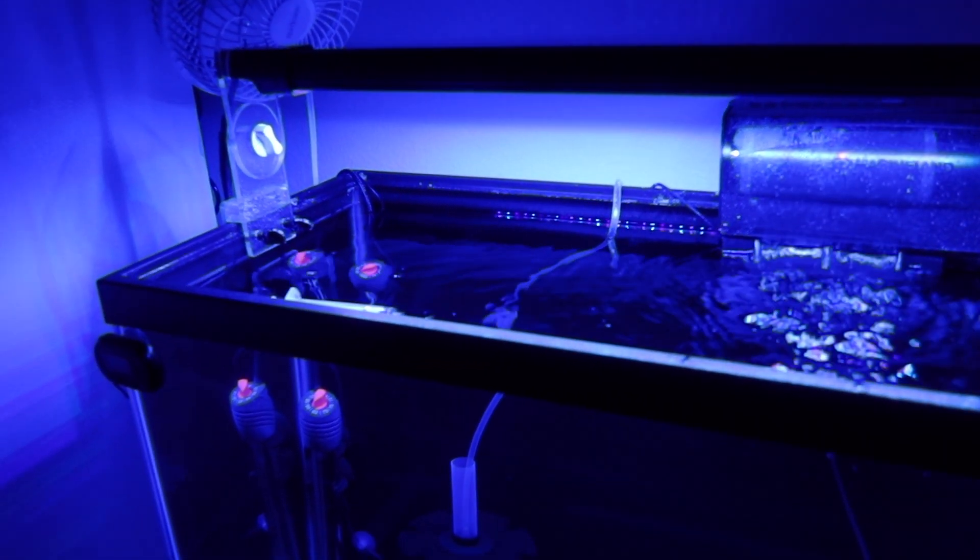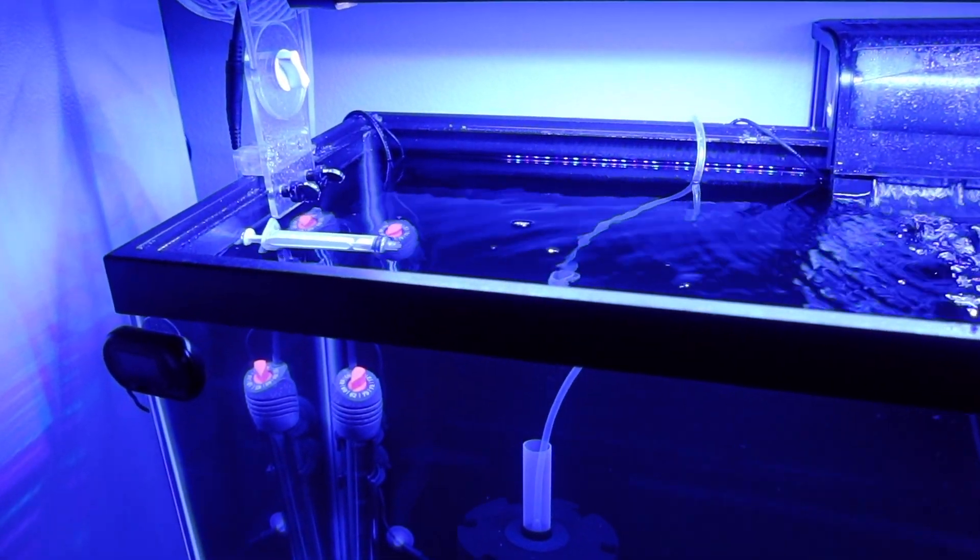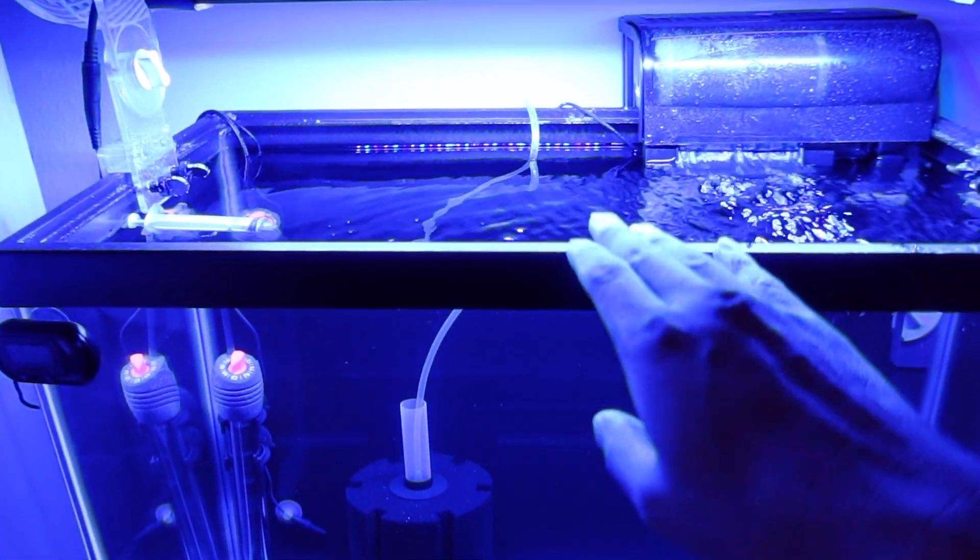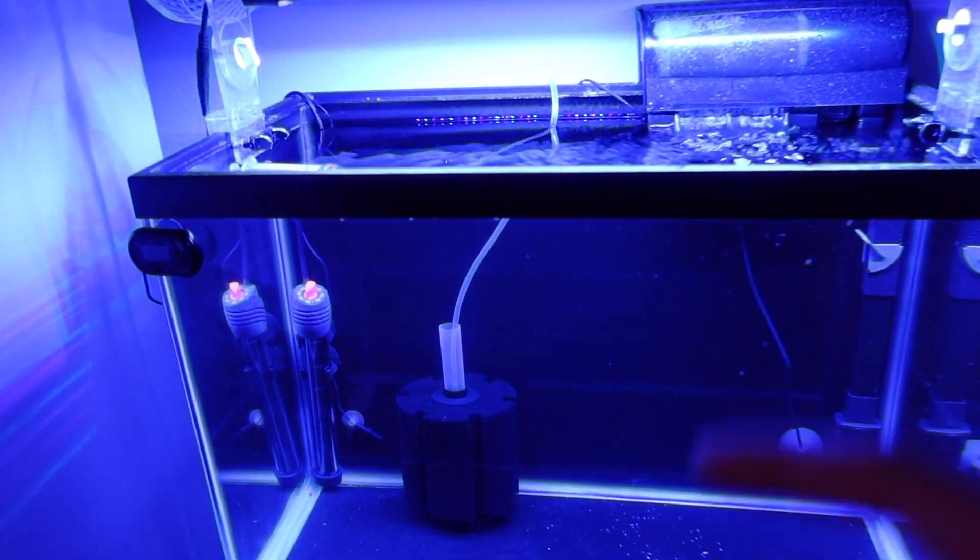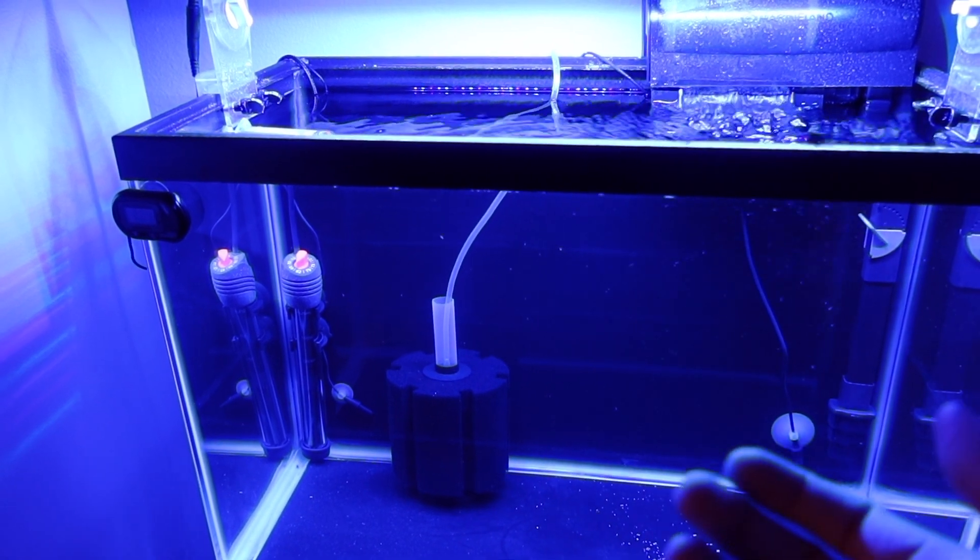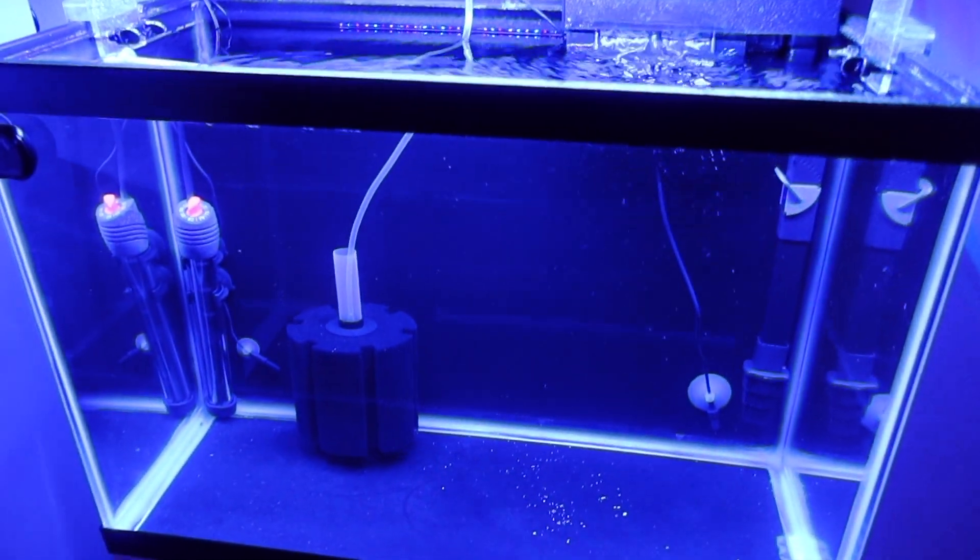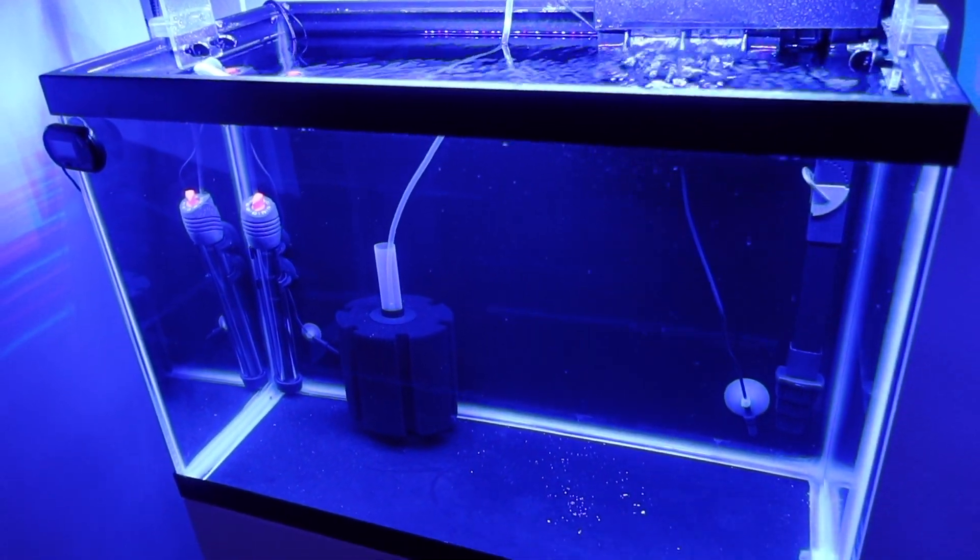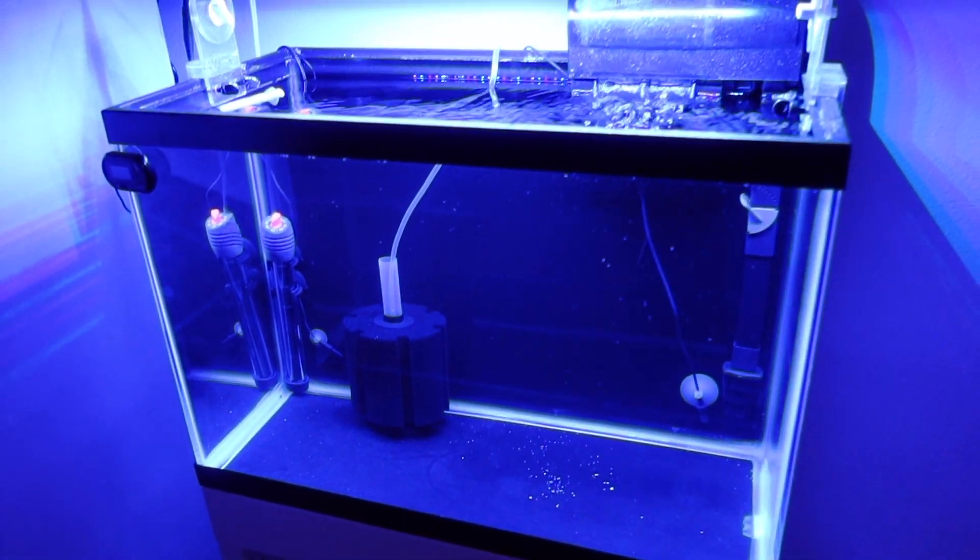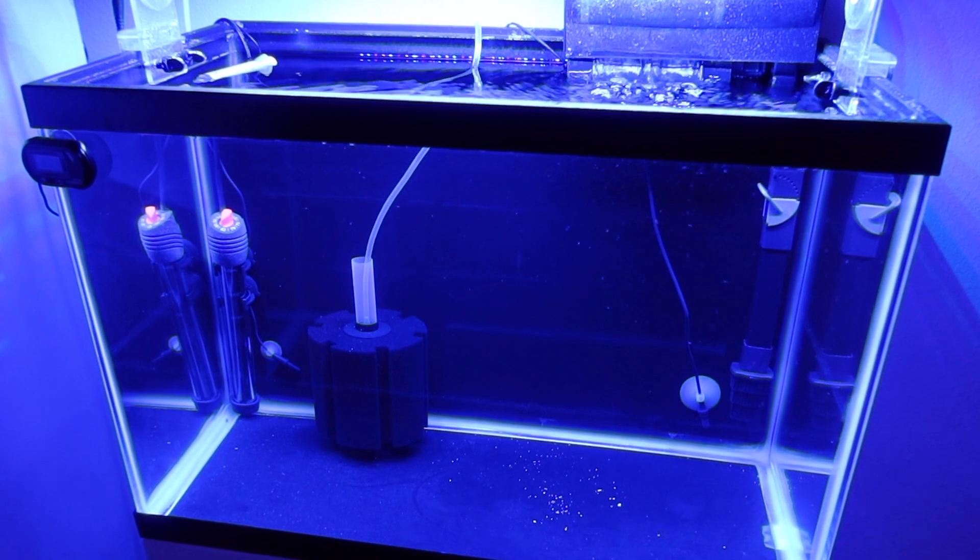I've already acclimated the fish, floated the bag, and made sure the temperature is acclimated. Generally speaking, you can drip acclimate it, and you probably do want to drip acclimate, especially if the salinity is different. Generally in quarantine displays, they're run at lower salinities. One, it helps with the parasites as far as getting them to go through their life cycle a bit quicker. Number two, it also saves you money on salt. On my specific tank, I'm running my salinity at 1.020 to 1.019, so it's slightly lower.